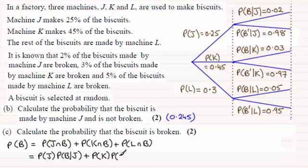And similarly, for L and B, it's going to be the probability that it came from machine L multiplied by the probability that it was broken given that it came from L.